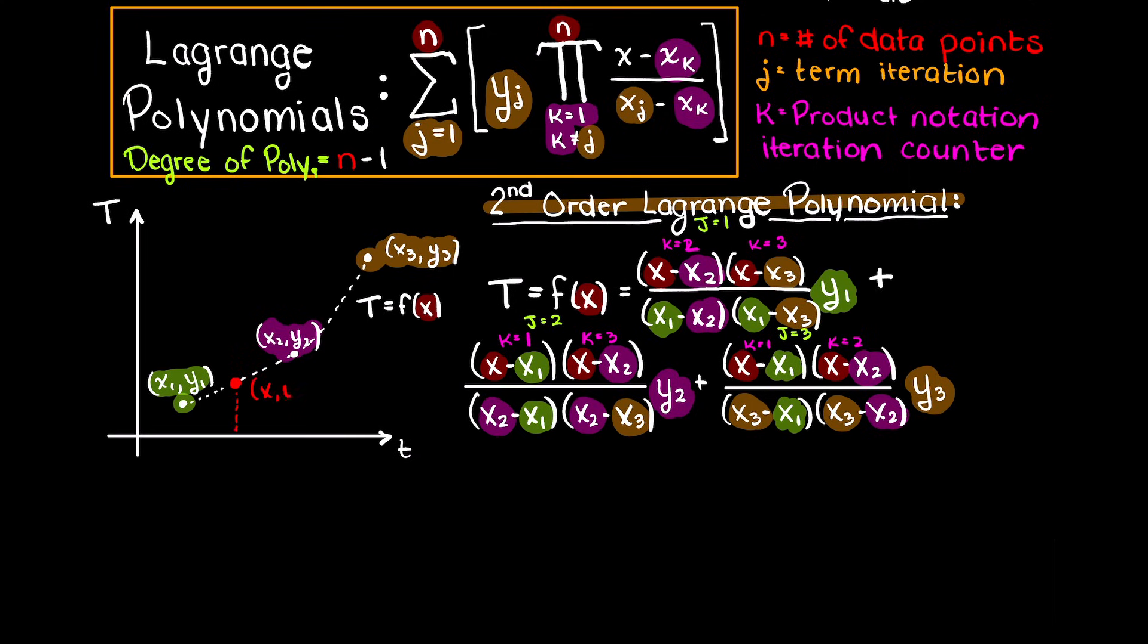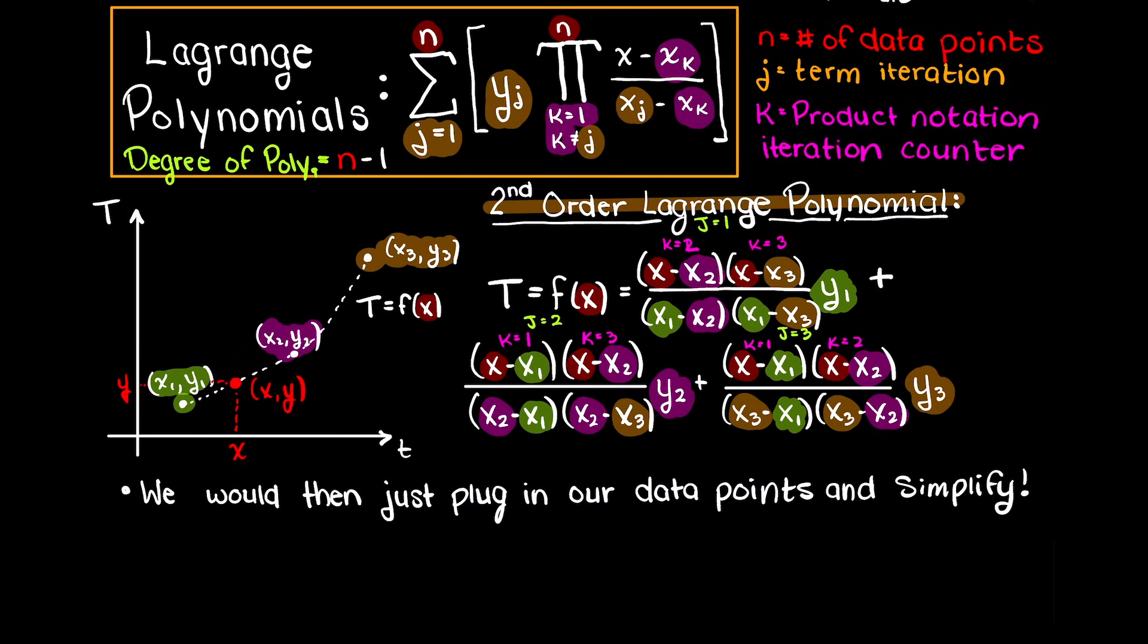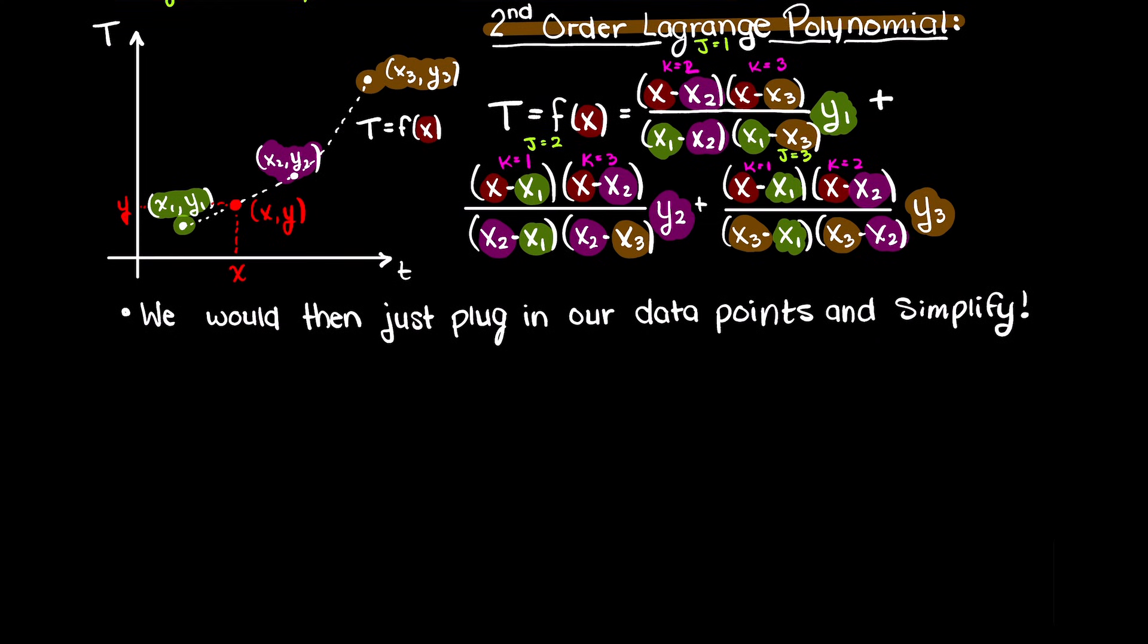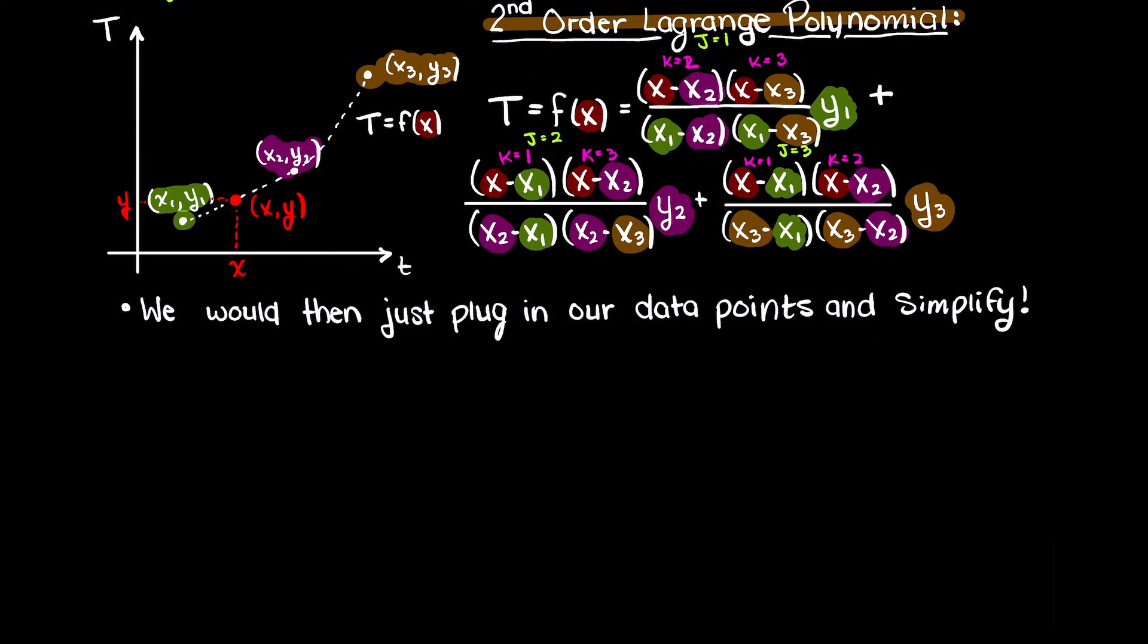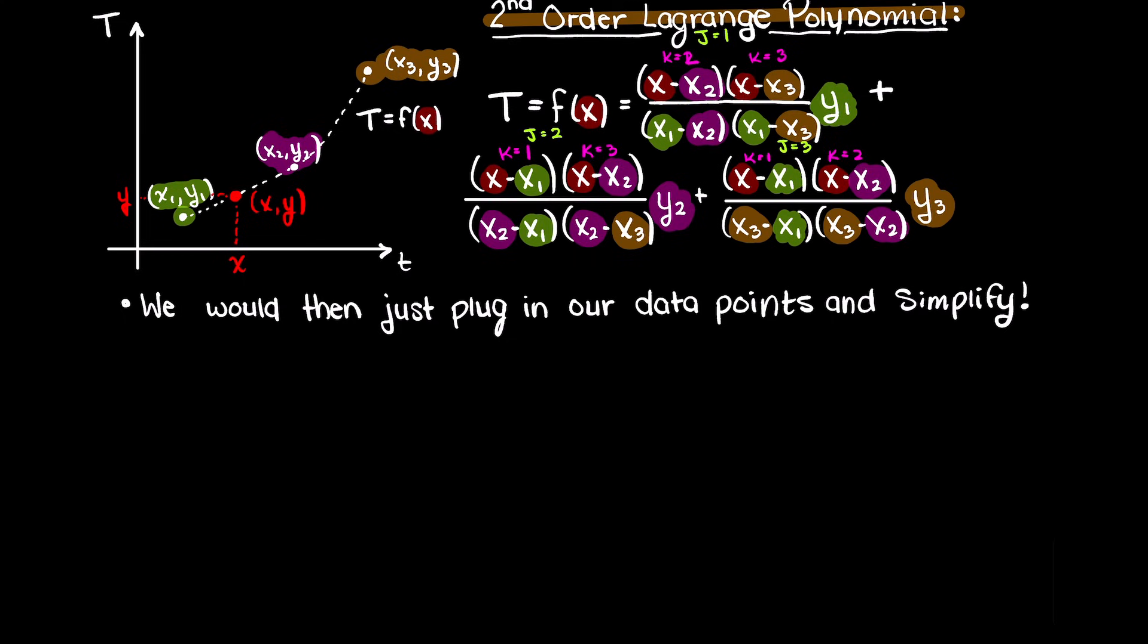Now that is all we need to do other than plugging in our variables and simplifying. Previously I mentioned that it makes sense that we leave out k equals j, but why is that? Well as interpolation functions need to go through all the data points that we give it, what would happen to this function if we give it an input of x1 and we have x minus x1 present?